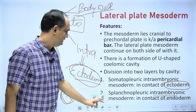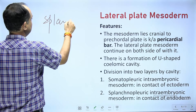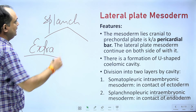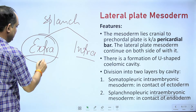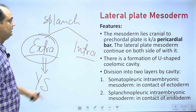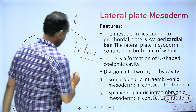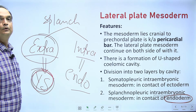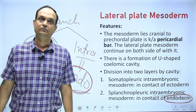Regarding splanchnopleuric, there are also two types: splanchnopleuric intra embryonic mesoderm and splanchnopleuric extra embryonic mesoderm. The splanchnopleuric extra embryonic mesoderm is present around the developing yolk sac, while the splanchnopleuric intra embryonic mesoderm is related with the endoderm. The yolk sac is lined by the hypoblast cell layer, and hypoblast converts into future endoderm.